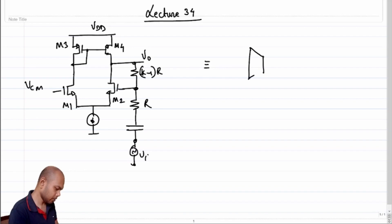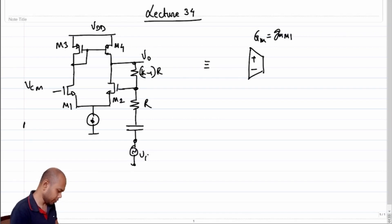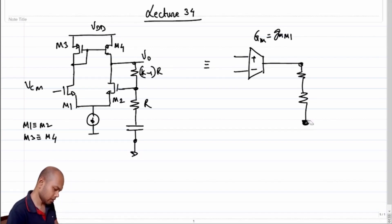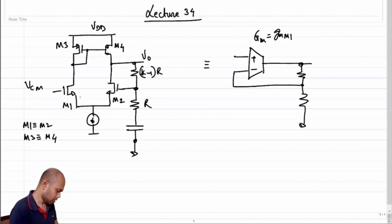Incrementally this circuit is equivalent to some GM. What is that GM? GM is equal to GM of M1, and we are assuming M1 is identical to M2, and M3 is identical to M4. In the incremental picture, this is what is happening — sorry, I should not apply VI here. This should be rounded, and in the incremental picture this is what is happening.